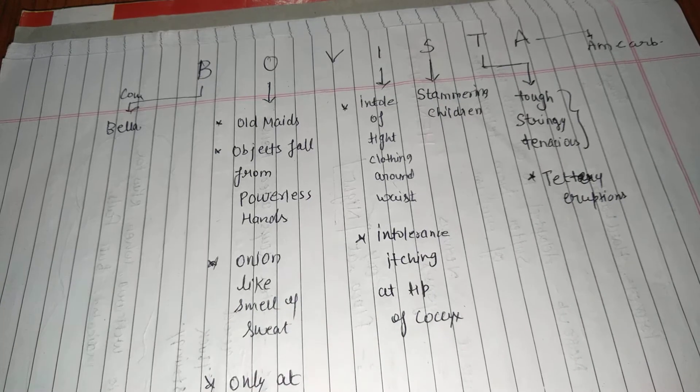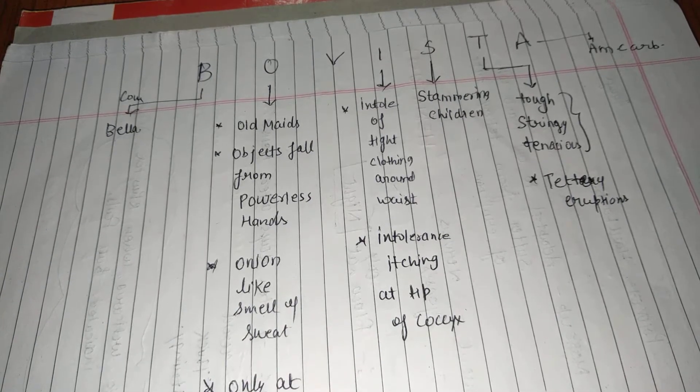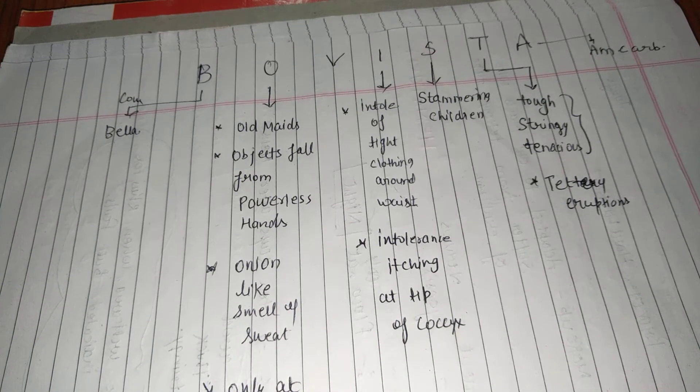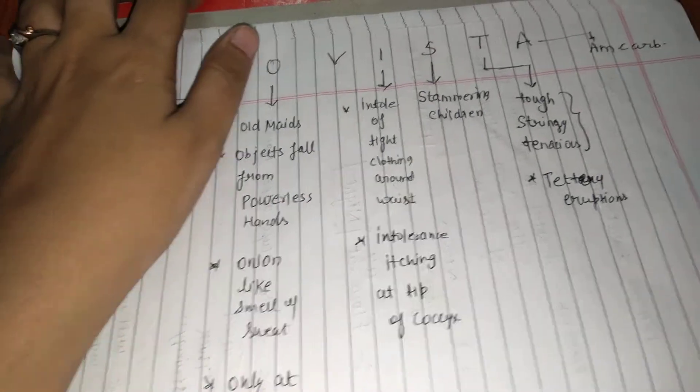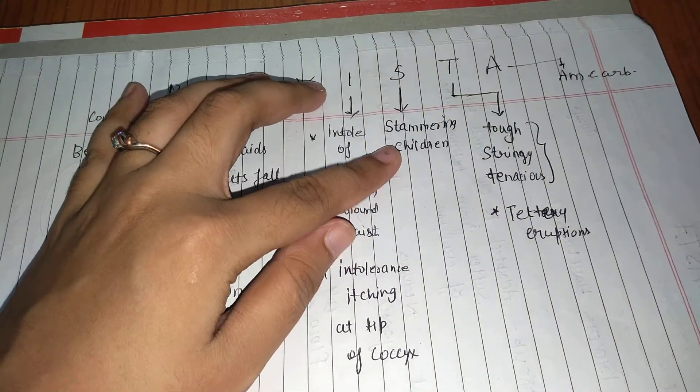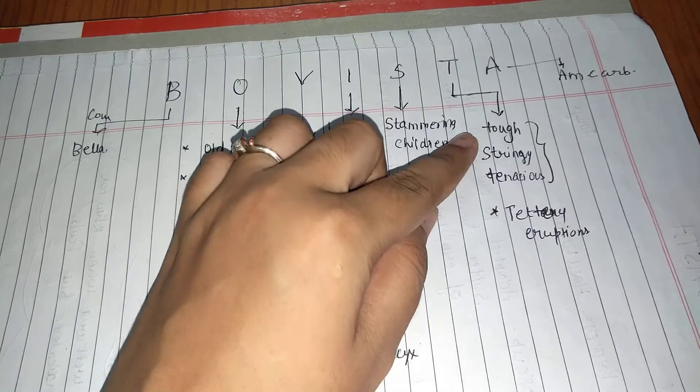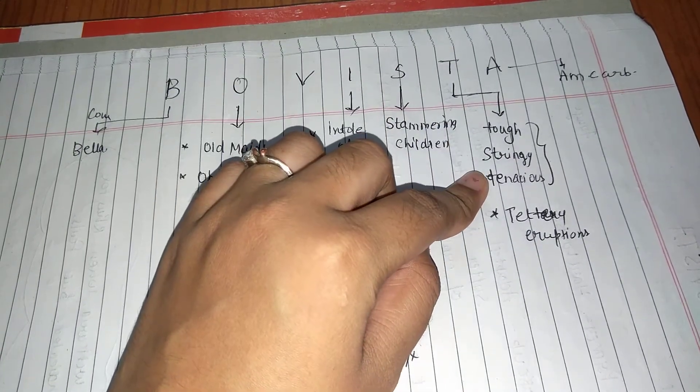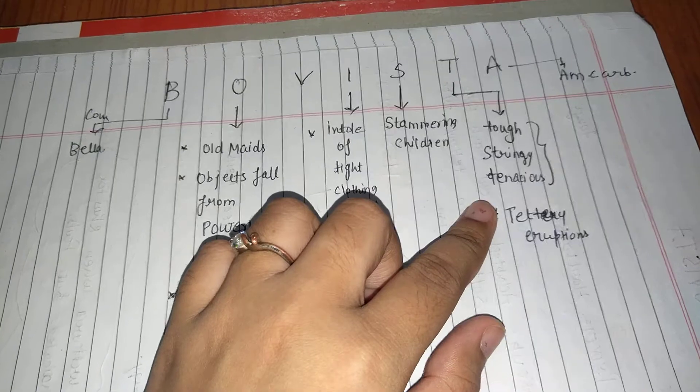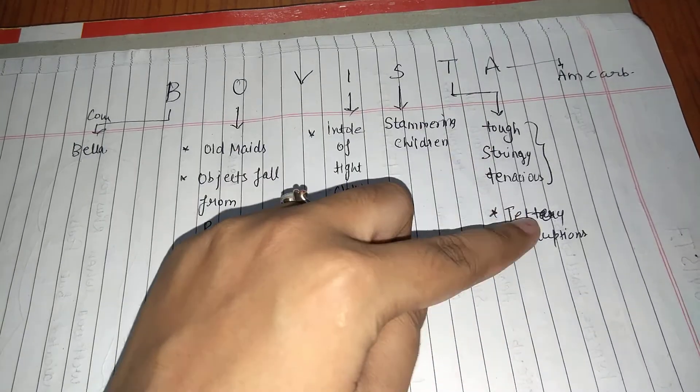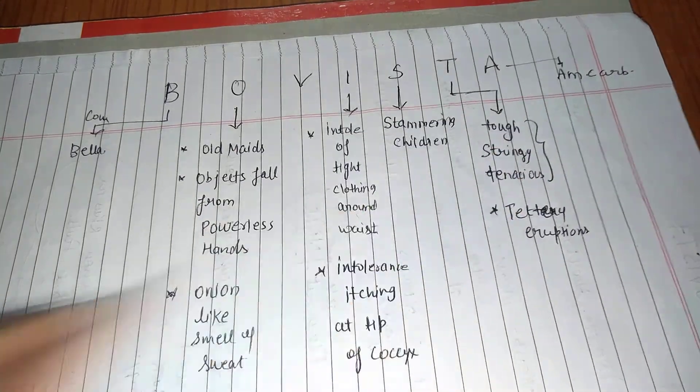Itching at the tip of the coccyx, coccyx is intolerant, itching is so irritating. Stammering children. T: touch, stringy and tenacious, this type of discharge, tattered eruptions. And A from ammoniacal.